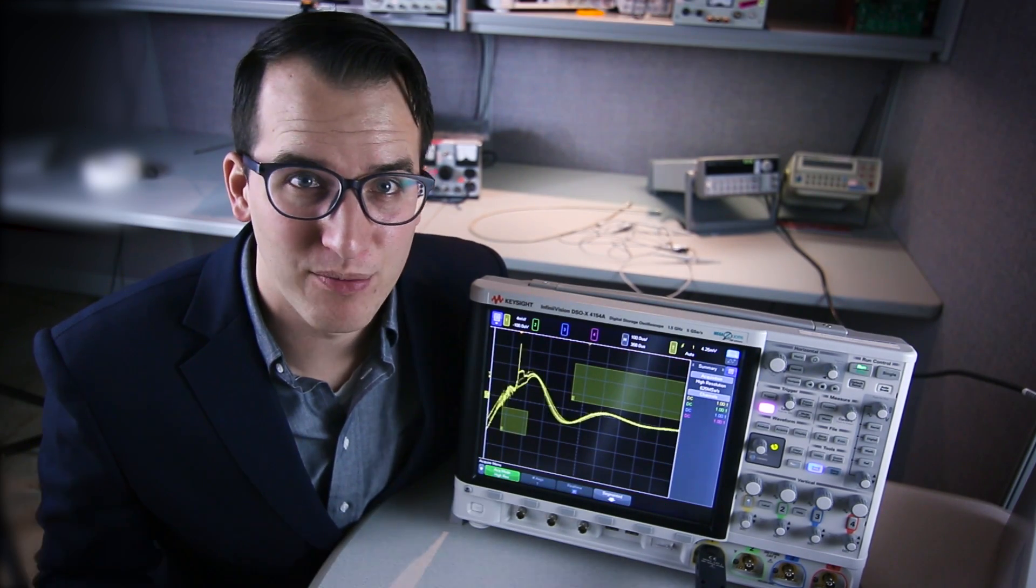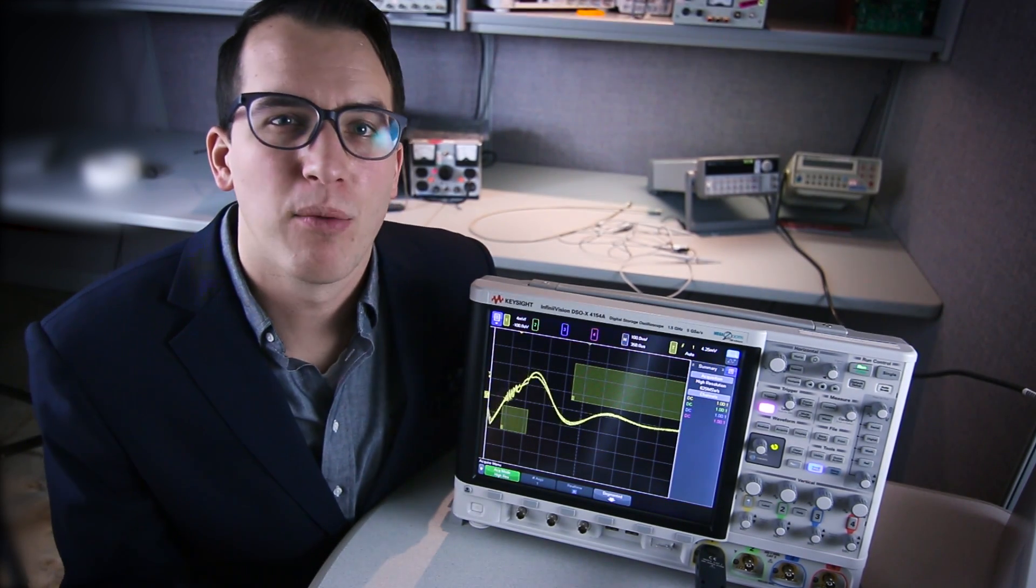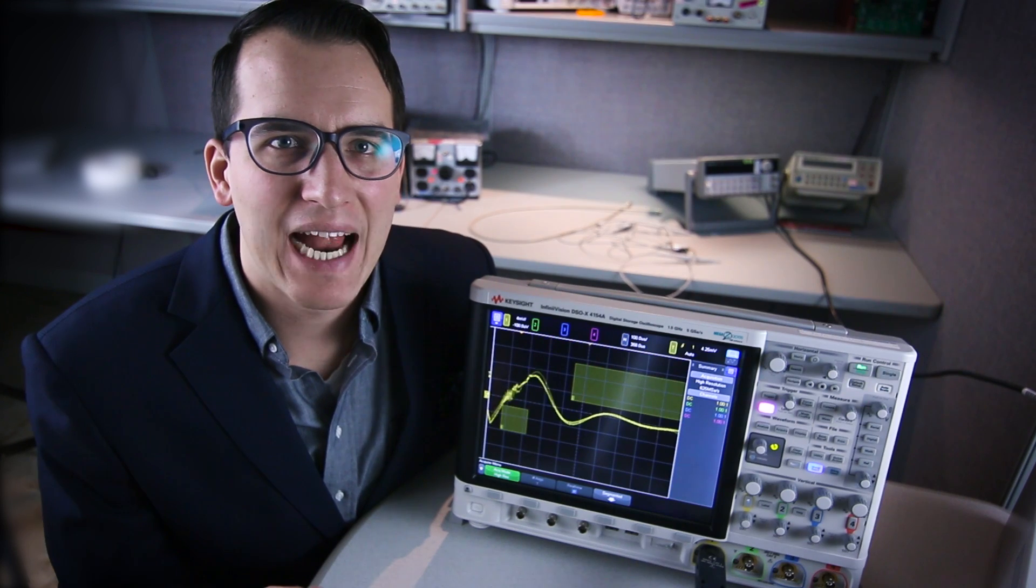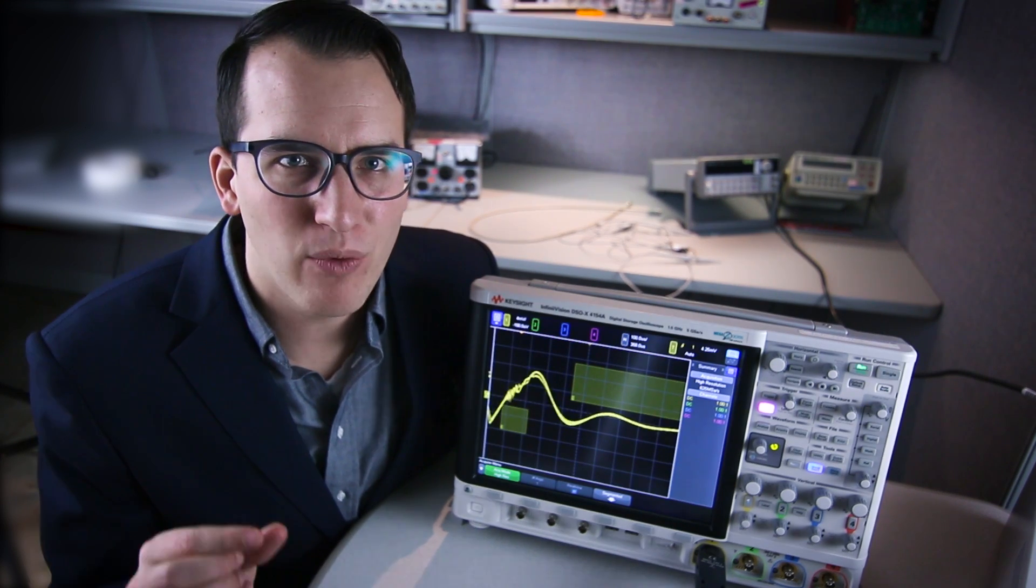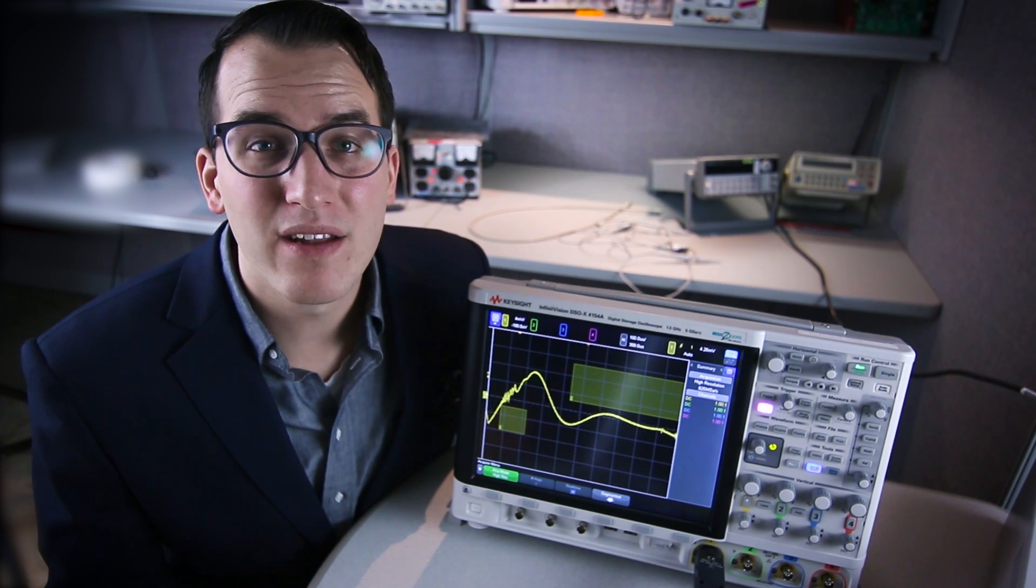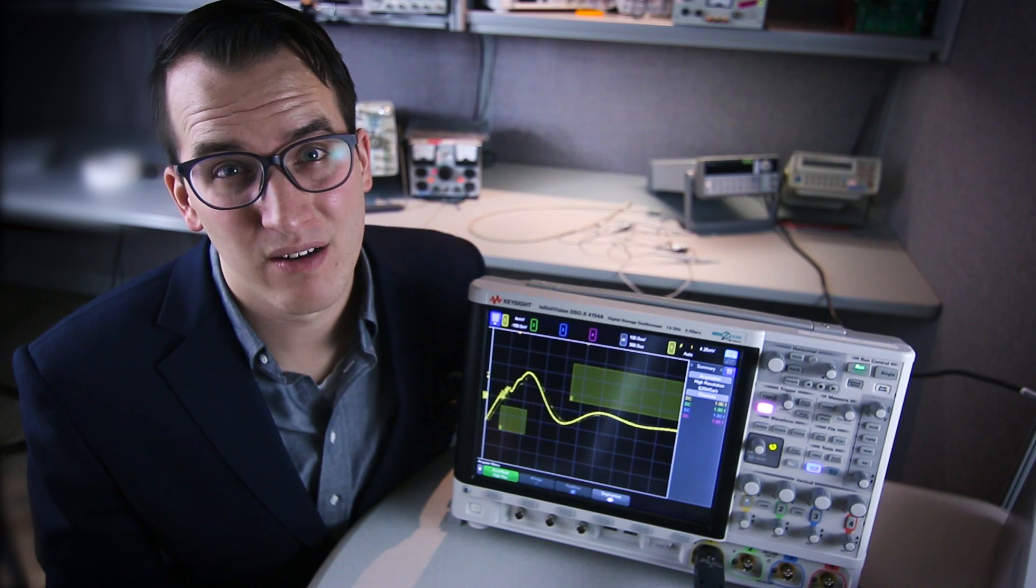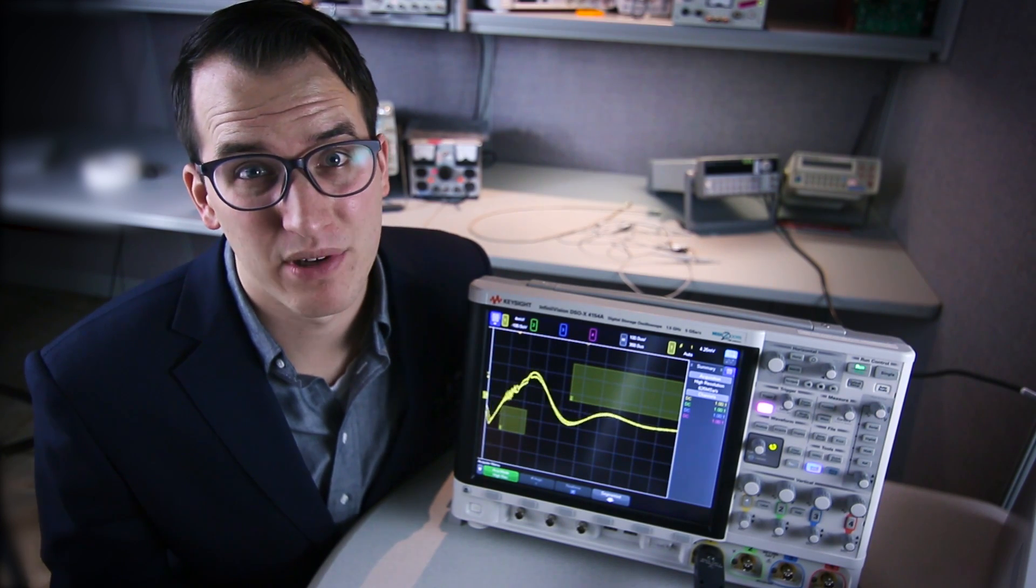Here I've put the scope in high resolution mode. In high resolution mode the oscilloscope oversamples the signal and then averages neighboring points together to get one average point. This way the random noise in neighboring points get averaged out and we get a much better view of what's actually happening on our signal.